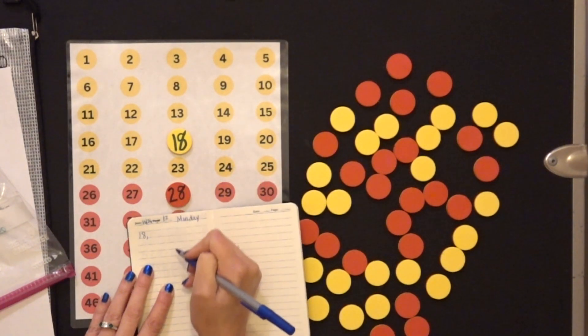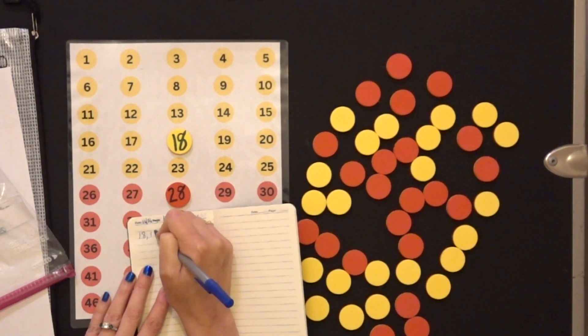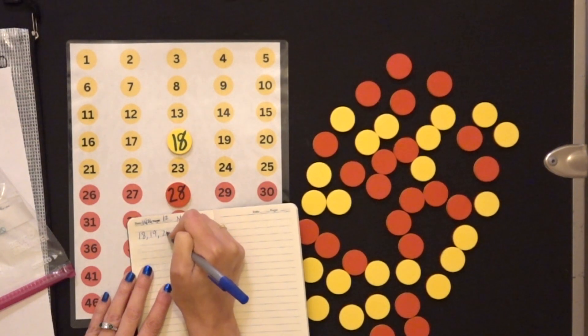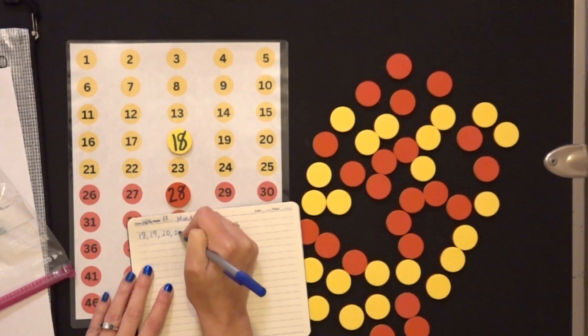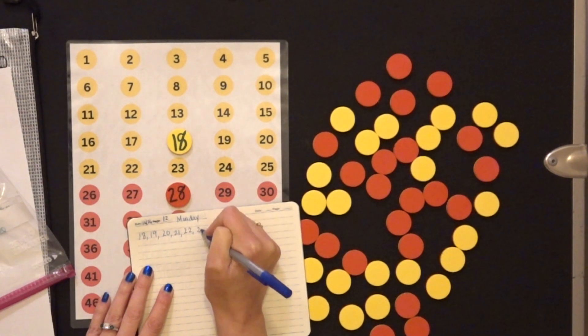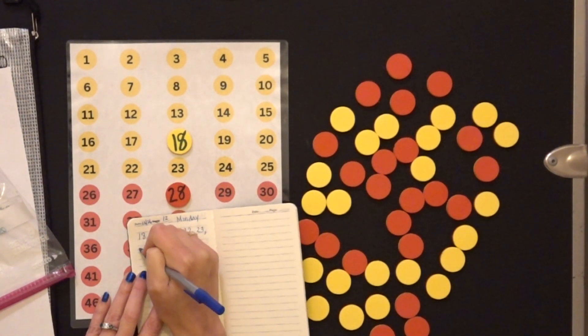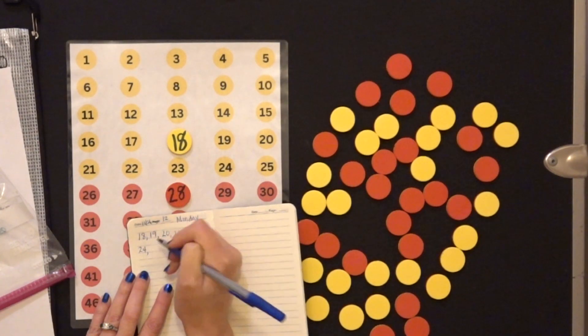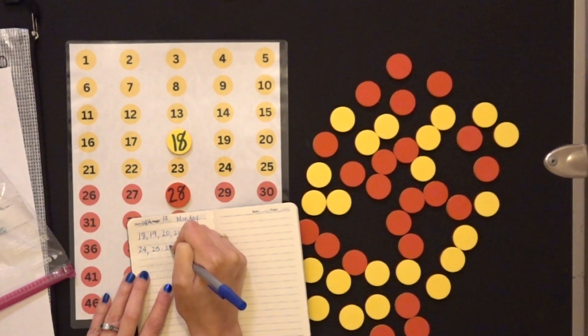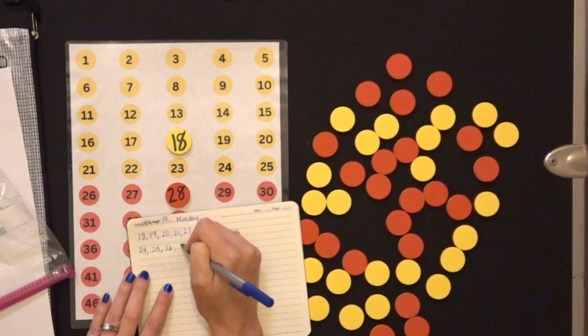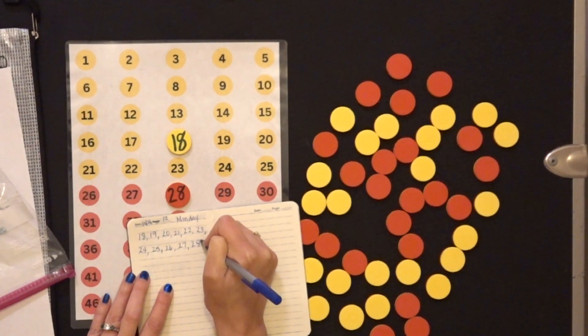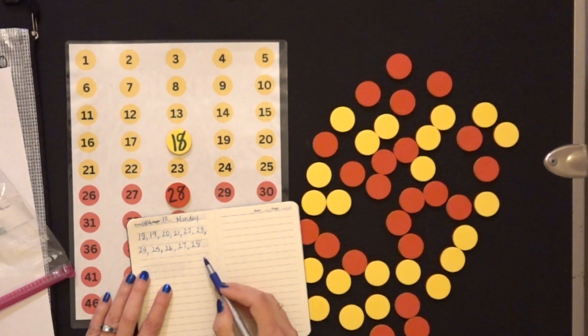And then I'm going to put all the rest of them till I get to 28. 19, 20, 21, 22, 23, 24, 25, 26, 27, and 28. That's where I get to stop.